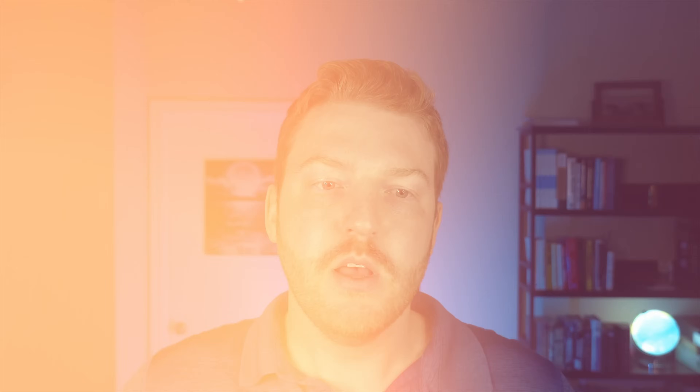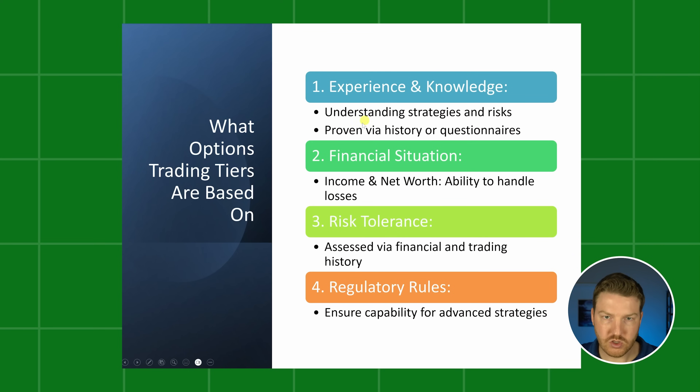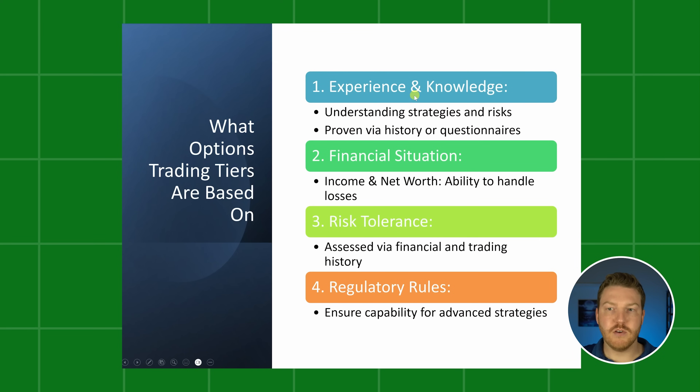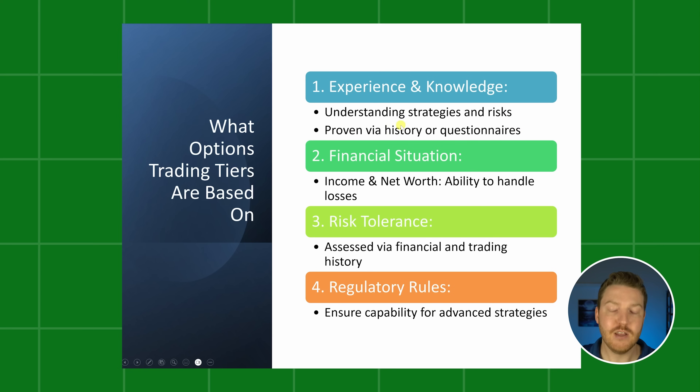So what determines whether we can access those tiers or if they grant us permission? There are basically four key categories. I'll show you in Interactive Brokers how we can go through and change our settings to get different levels of permissions. The tiers are generally going to be based on these four things. The first is experience and knowledge — they'll give us questionnaires to display how much experience and knowledge we have.